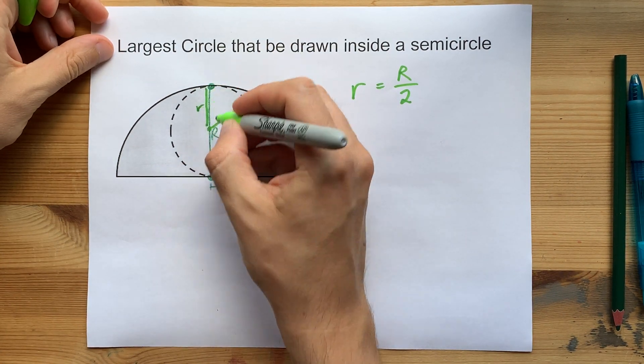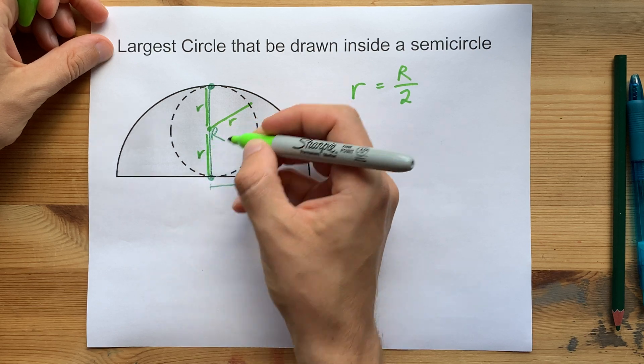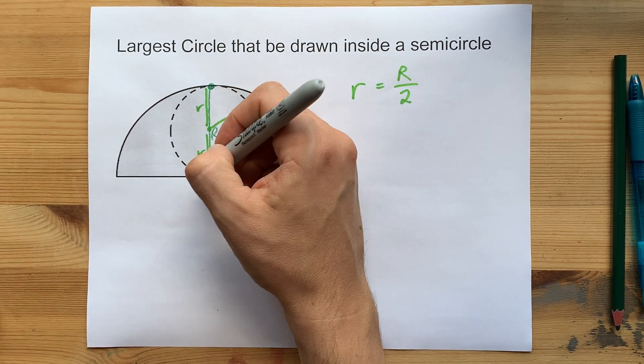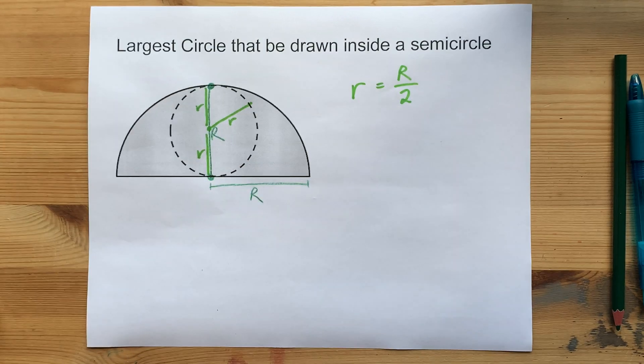It's because this is an R and this is an R, and those two things together add up to give you big R.